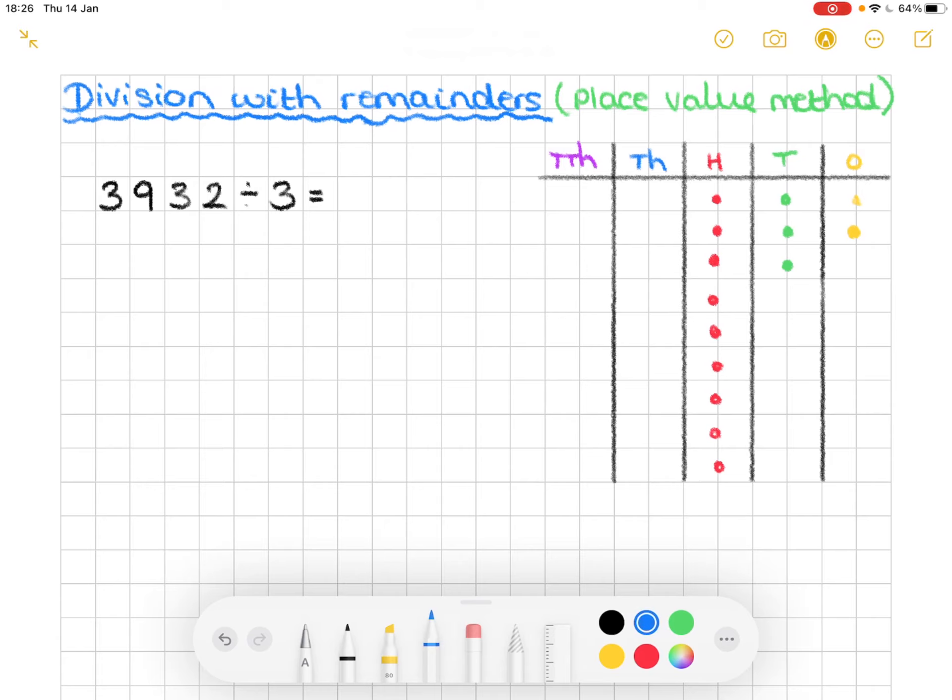And finally, we have three in our thousands column. One, two, three.